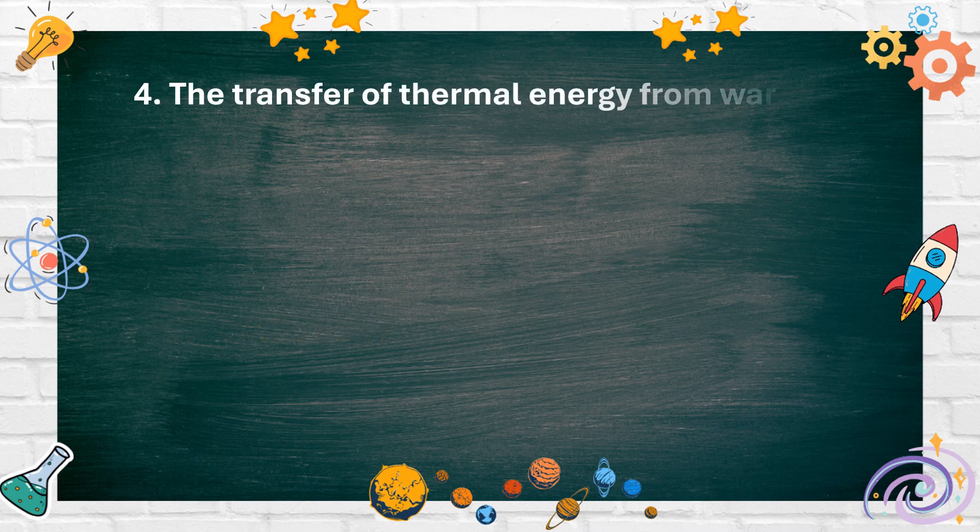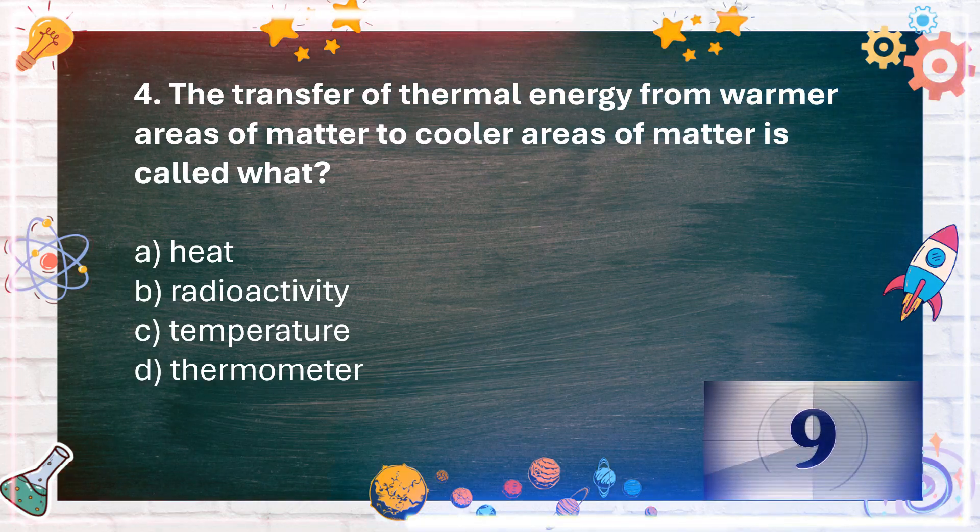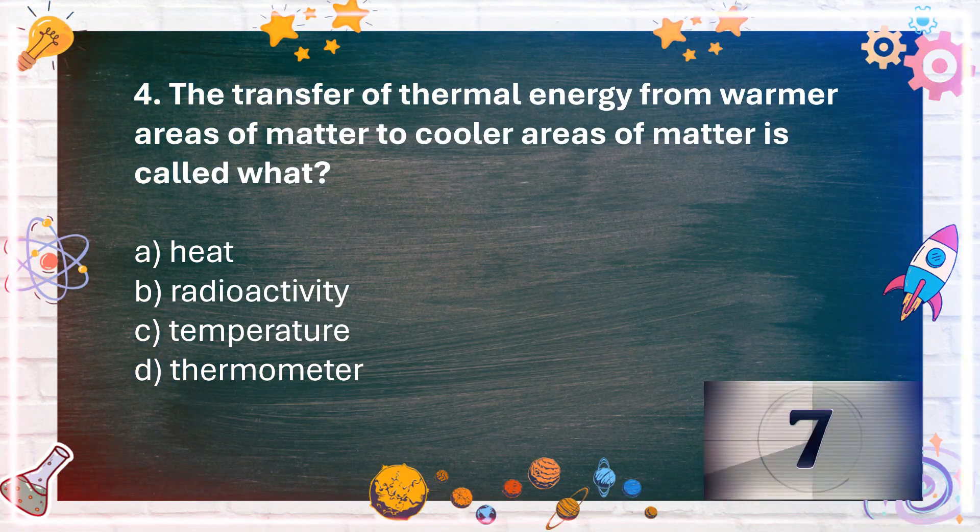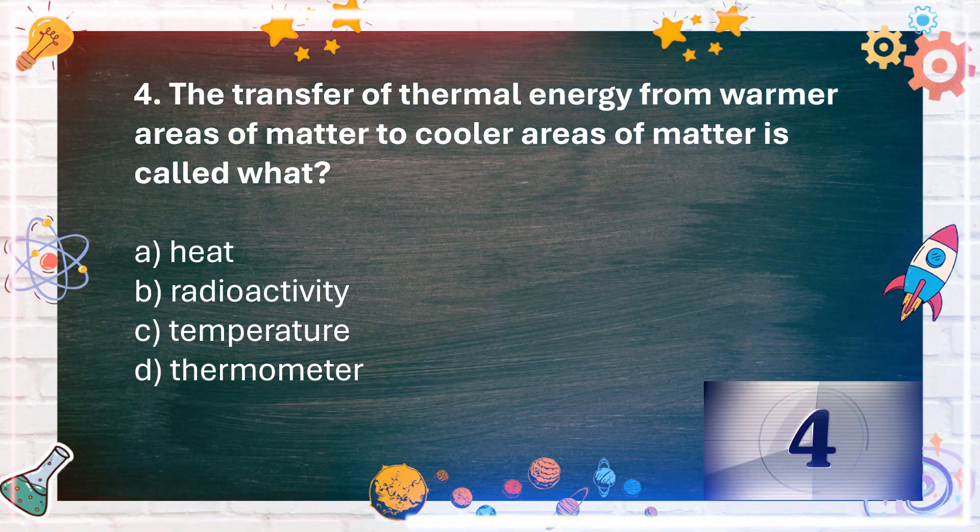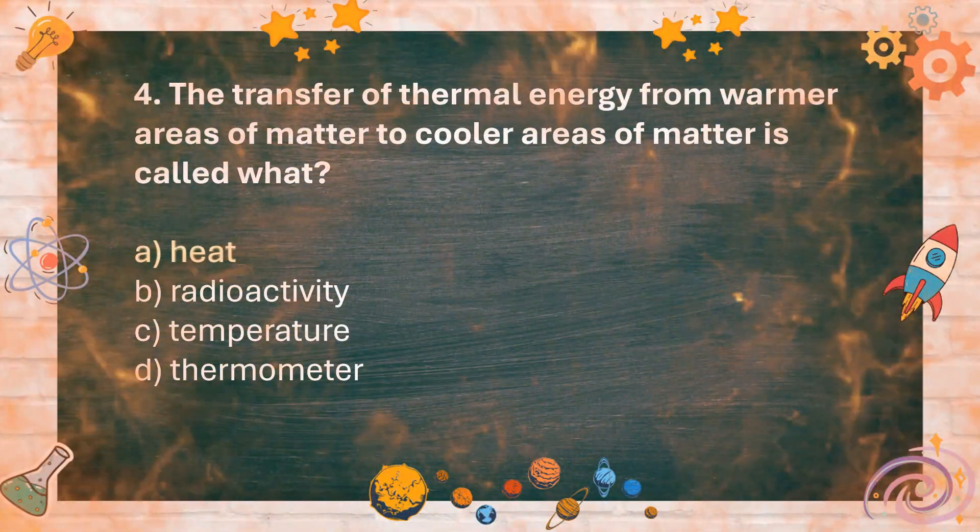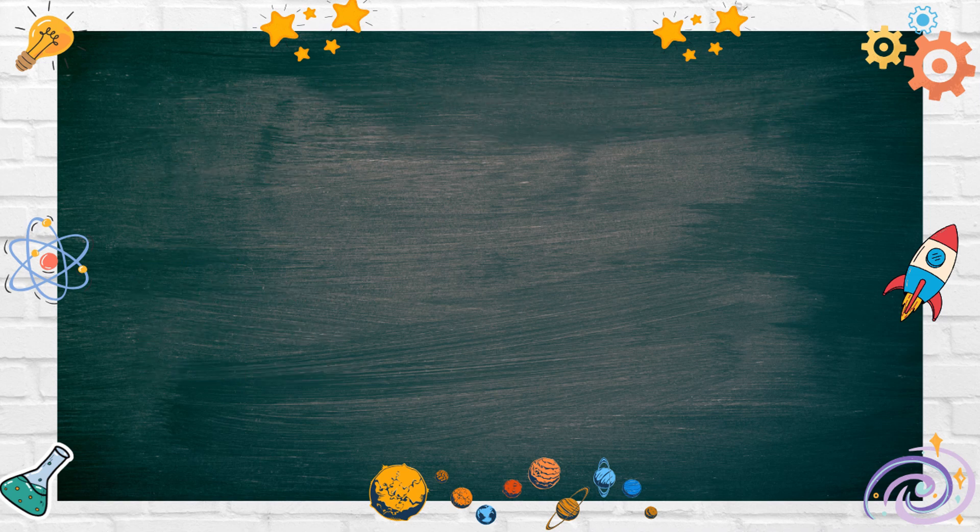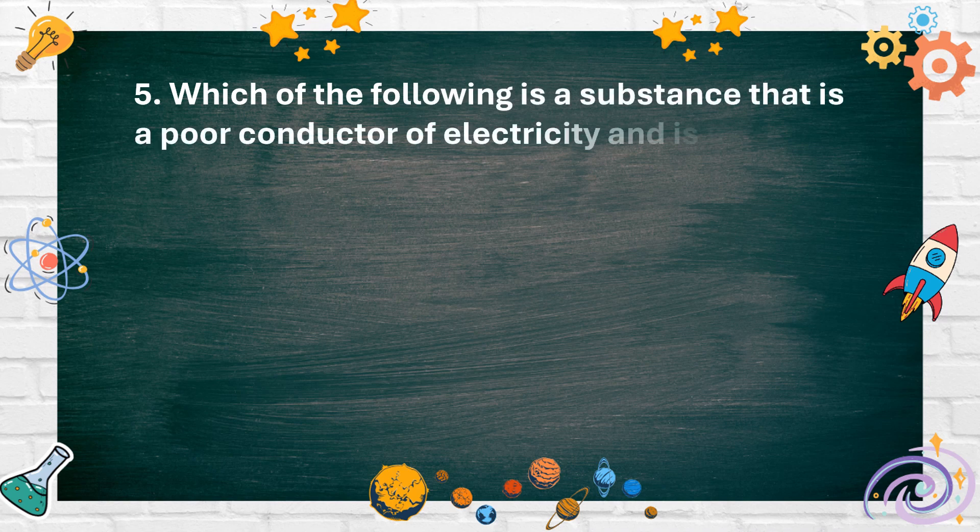Number 4. The transfer of thermal energy from warmer areas of matter to cooler areas of matter is called what? A. Heat B. Radioactivity C. Temperature D. Thermometer. The answer is A. Heat.